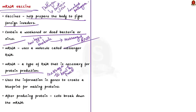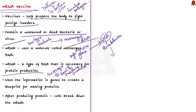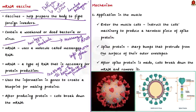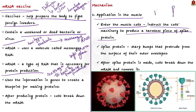In a cell, mRNA uses the information in genes to create a blueprint for making proteins. Once cells finish making a protein, they quickly break down the mRNA. In simple words, mRNA vaccines teach our cells how to make a protein that will trigger an immune response inside our body. Step by step: firstly, the mRNA vaccine is given in the upper arm muscle. The mRNA enters the muscle cells and instructs the cell's machinery to produce a harmless piece of spike protein.